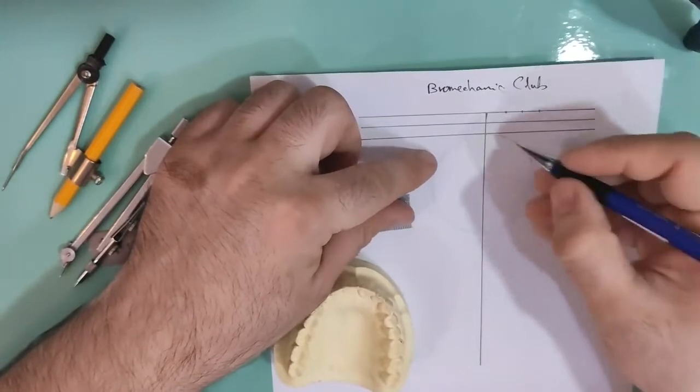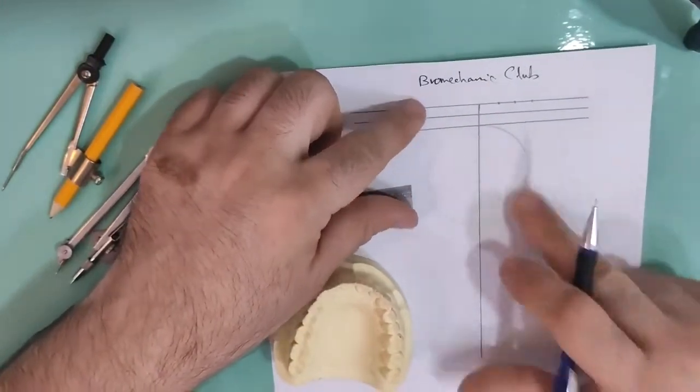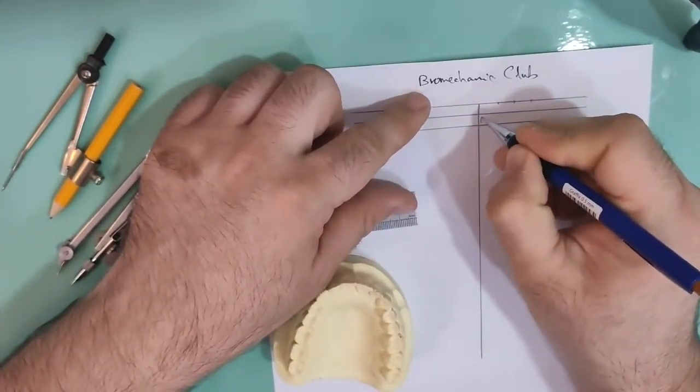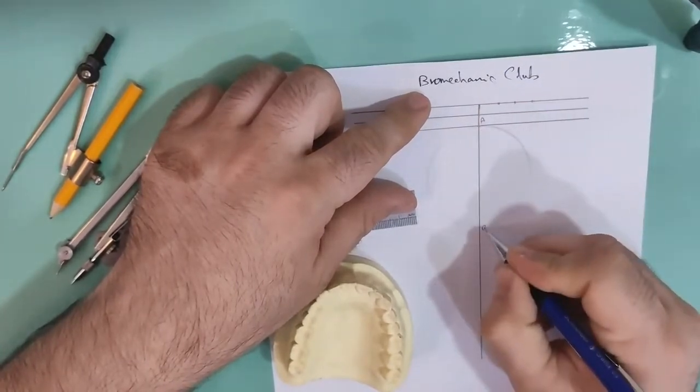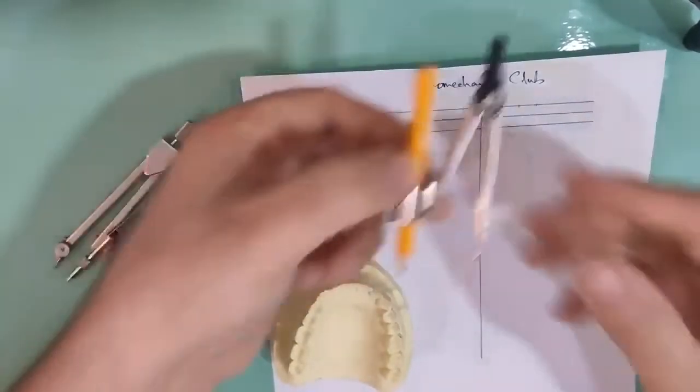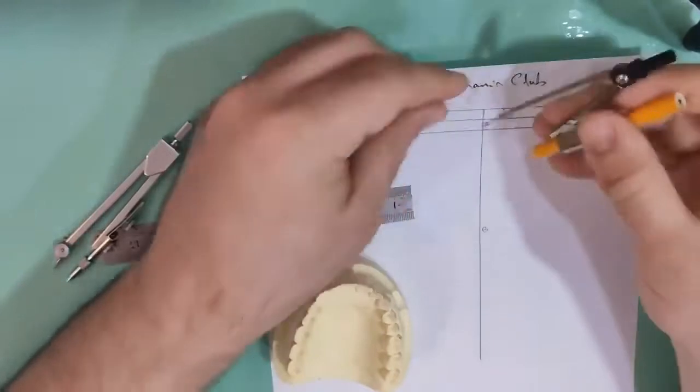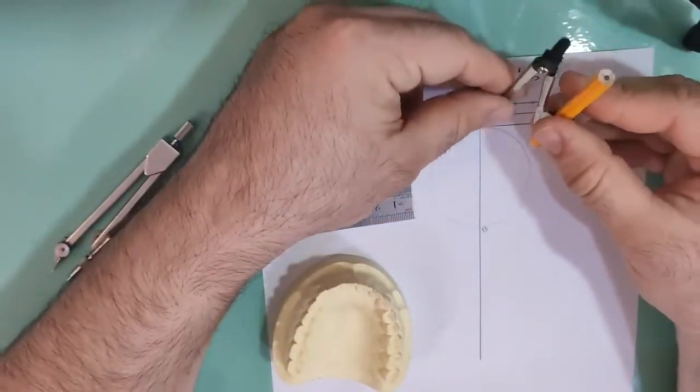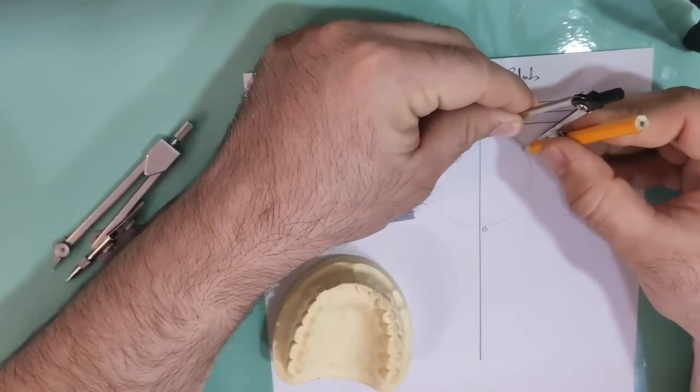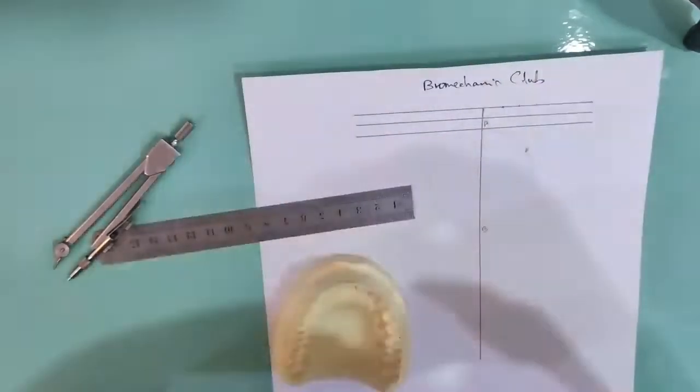This circle will intersect this line at two points. This point is A and this point is B. With the same radius, we put this head on A point and intersect this side of circle at this point.